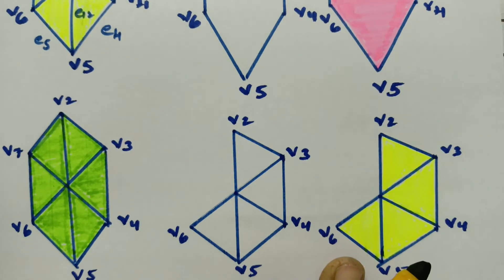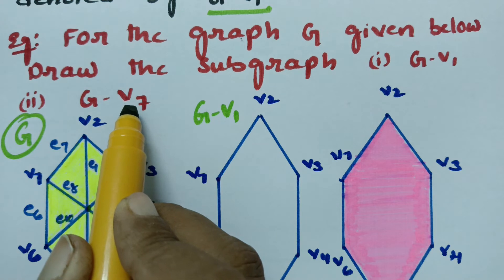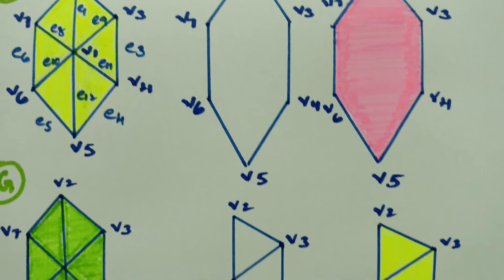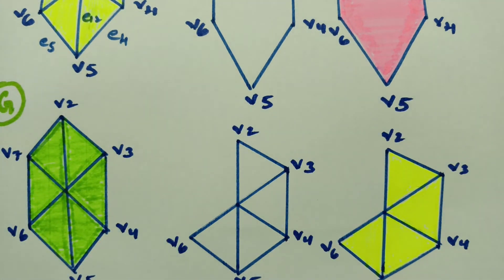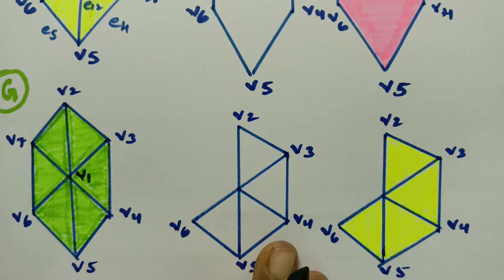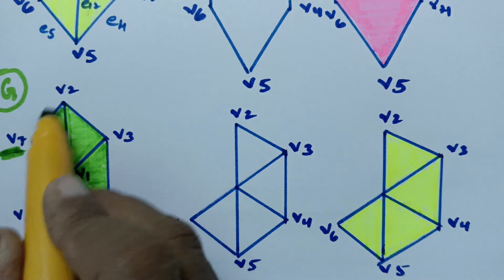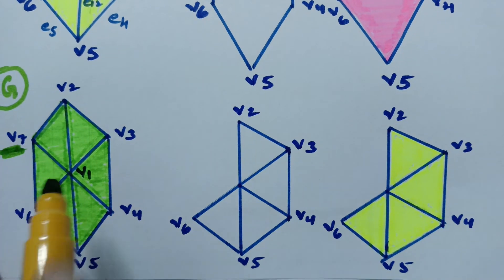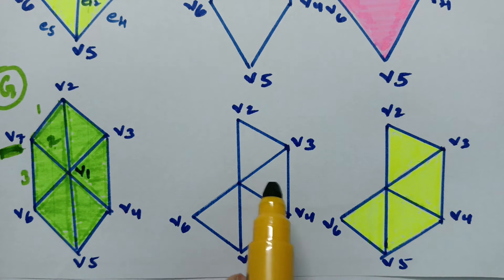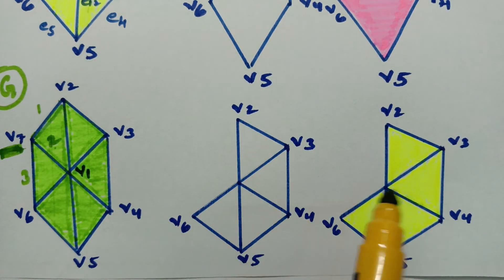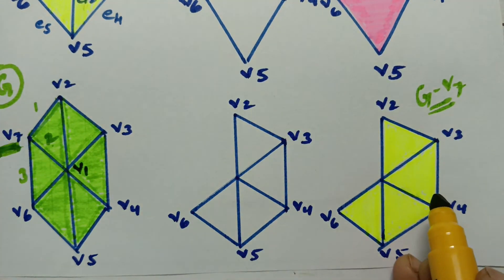Here is another example. The main graph G is the same as before. The second question asks us to remove vertex V7. V7 has 3 edges incident with it. So we remove those 3 edges along with the vertex V7. The resulting fresh graph is G minus V7, which is the vertex deleted subgraph.